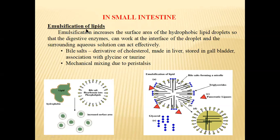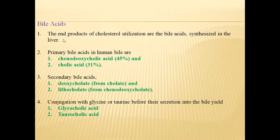In the emulsification of these lipid foods, bile salts are very useful. These bile salts are derivatives of cholesterol. They are made in the liver and stored in the gallbladder along with glycine and taurine. Mechanical mixing due to peristalsis also happens in the small intestine. The end products of cholesterol utilization are the bile acids, synthesized in the liver.